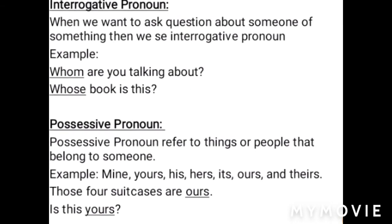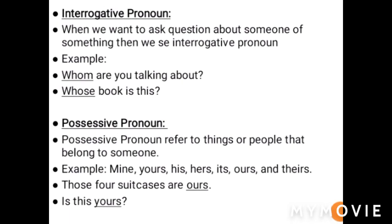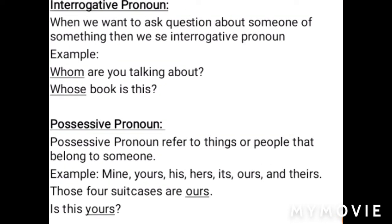The second type is interrogative pronouns. Interrogative pronouns are those pronouns used when we want to ask a question about someone or something. Example: 'Whom are you talking about?' — here 'whom' is the interrogative pronoun. 'Whose book is this?' — here 'whose' is the interrogative pronoun.